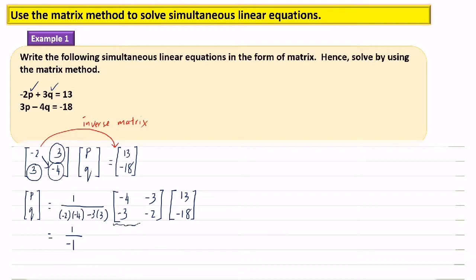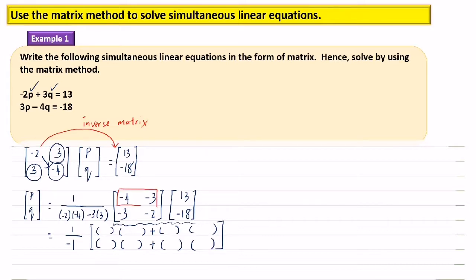At the same time, we calculate the multiplication of these two matrices. Draw four brackets with a plus at the middle, and the same for the second row. Multiply row by column: the first number multiplied by the first number — negative 4 times 13, plus the second number times the second number, which is negative 3 times negative 18.